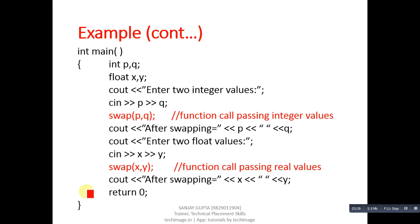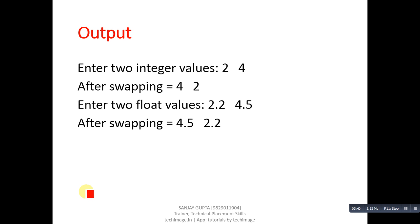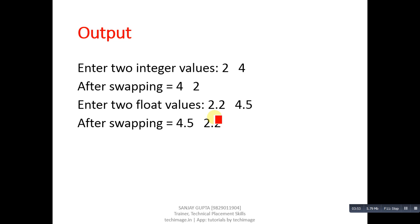You can see the output: first it is asking for two integers, so I entered two and four. After swapping, it prints four and two. Then the same for floats: 2.2 and 4.5, and after swapping the values are 4.5 and 2.2.